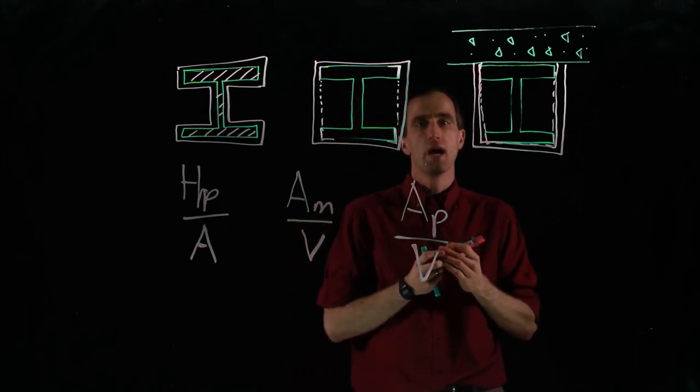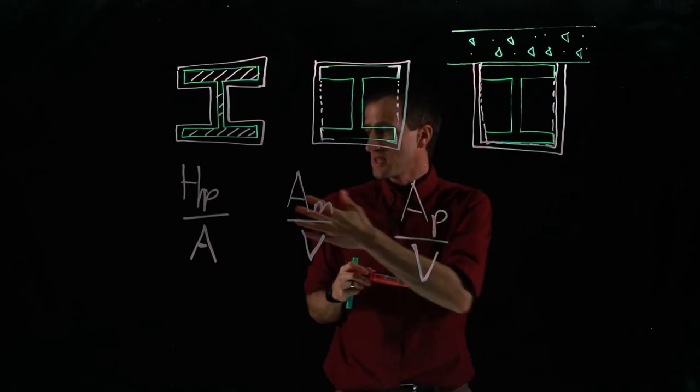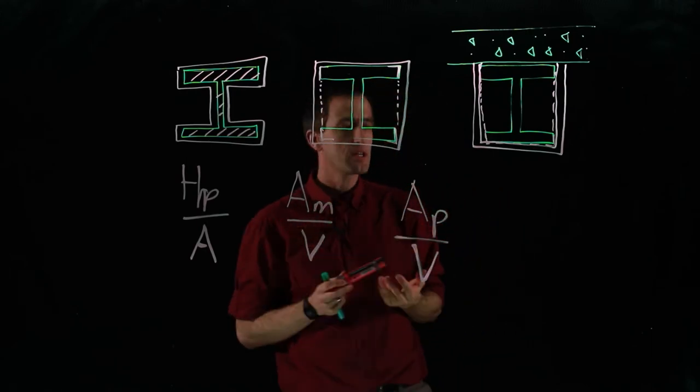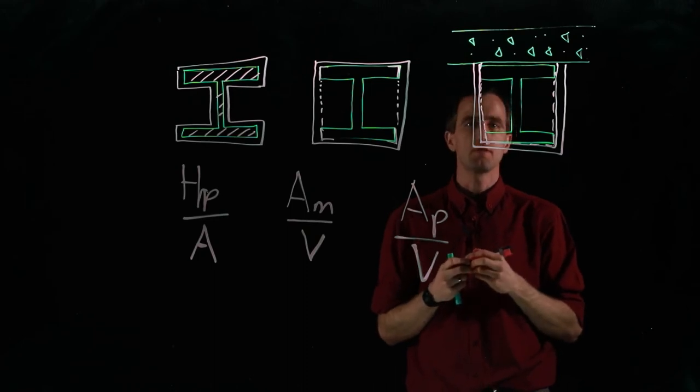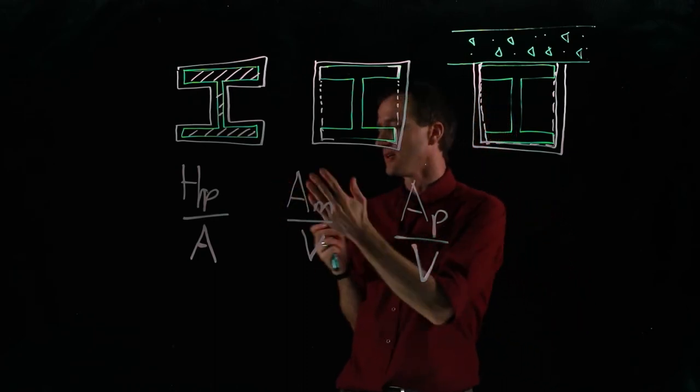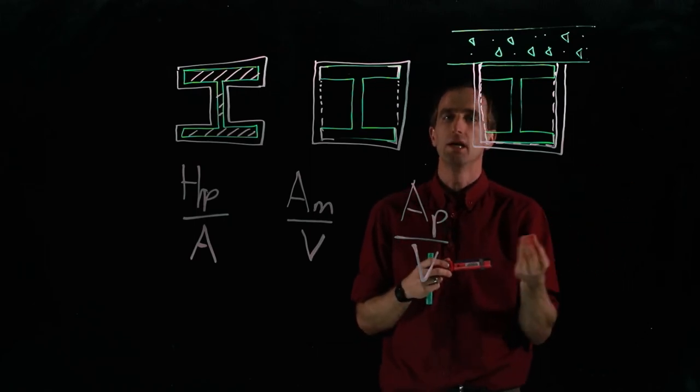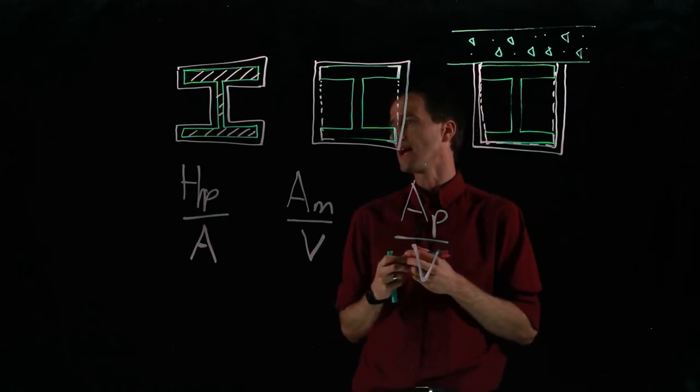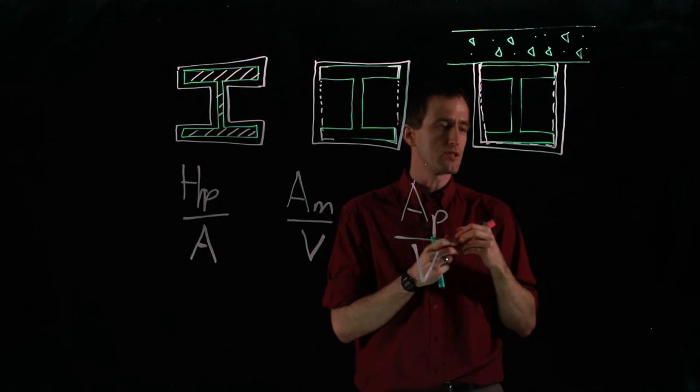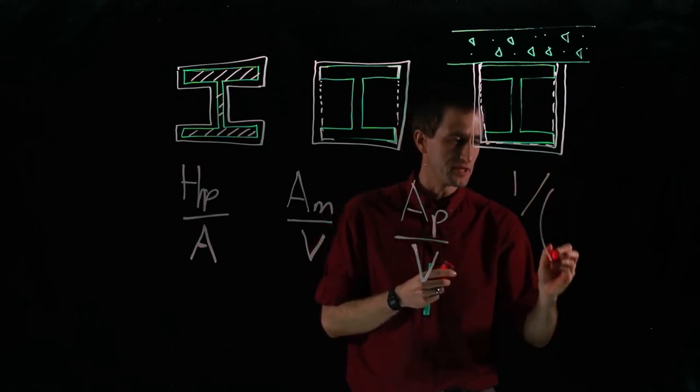Once you've got these numbers, initially when you look at them they may not be intuitively easy to understand. For instance, you get a value of 200 meters to the negative one, and you can't just look at that and see exactly what that means. But one useful way to think about it is if you just take the inverse of it.